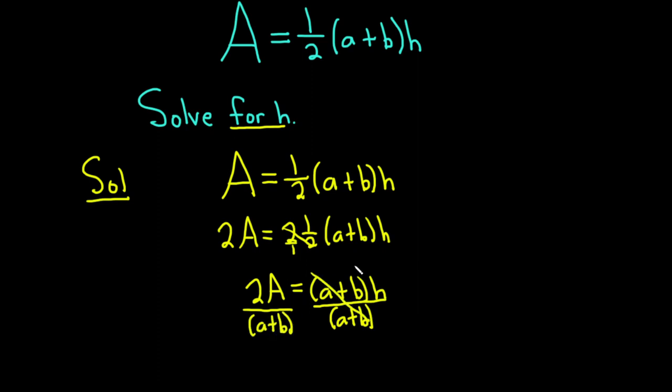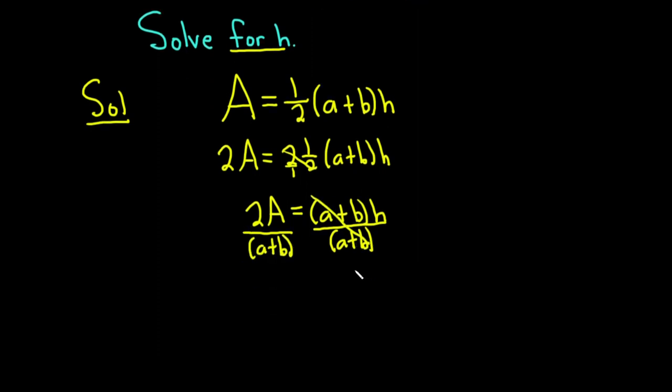And so we're left with 2A over (a + b). And on the right-hand side, we have h.